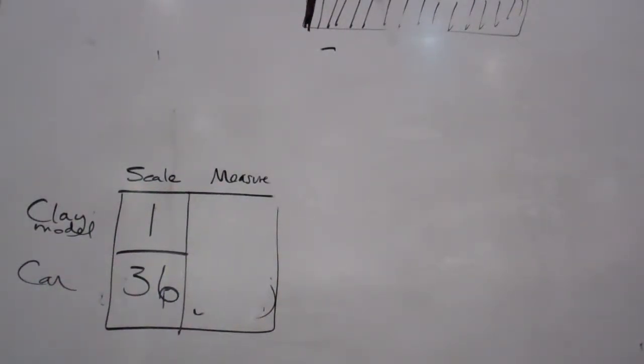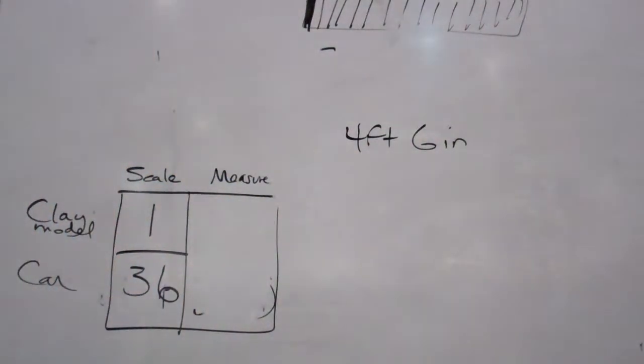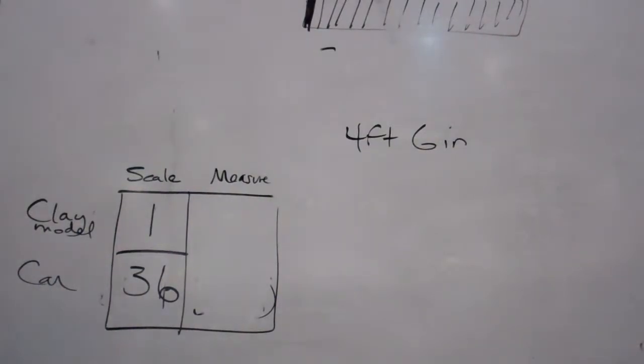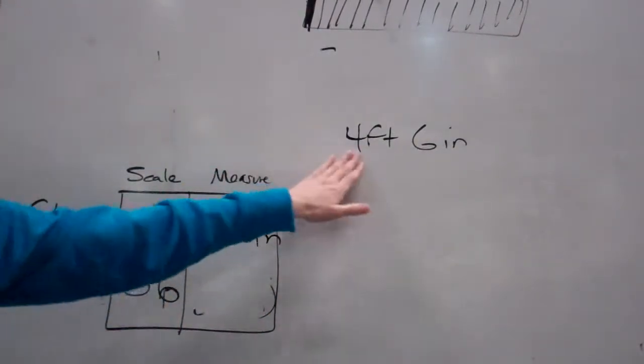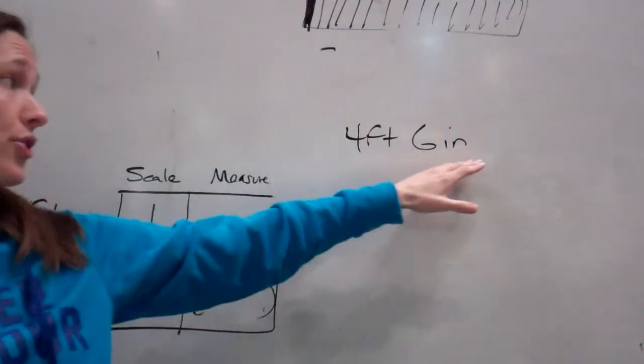Then it says, if the height of the car is 4 foot, 6 inches, so stay with me. I'm going to write it out to the side. The real car is 4 foot, 6 inches. What should be the height of the model in inches? Could I convert this to inches from the beginning? Yeah. Let's go ahead and do that. I think that would be easier.